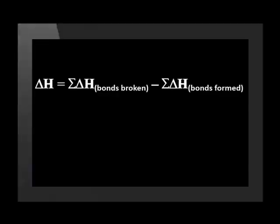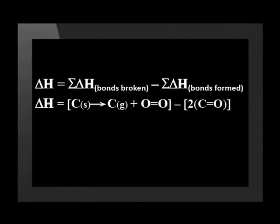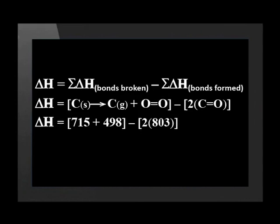Let's go through it. ΔH is equal to the sum of the energy changes when the bonds break, minus the sum of the energy released when the new bonds form. The bonds that break are when the solid carbon changes to gaseous carbon and the double bond between the oxygen atoms. The bonds that form are two carbon-oxygen double bonds. So, 715 plus 498 kJ of energy is required to break the bonds, and 2 times 803 kJ is released when the new bonds form. The answer is negative 393 kJ. So we know that this is an exothermic reaction that releases 393 kJ to the environment.